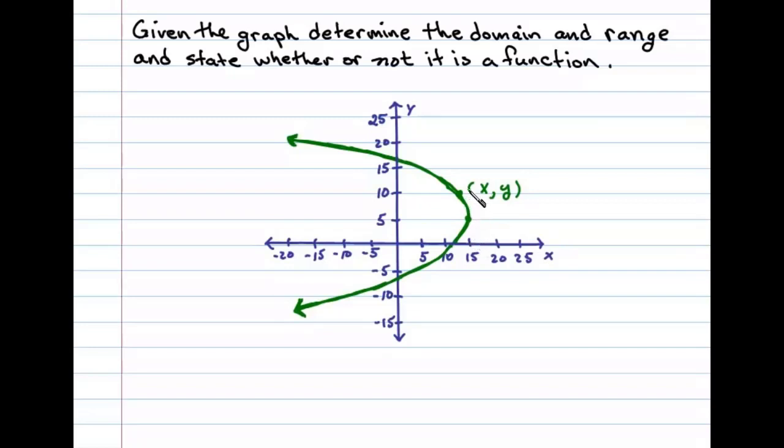From the graph it appears the maximum x value is 15, and all other x values are less than that. Here I've shaded in the domain on the x-axis.